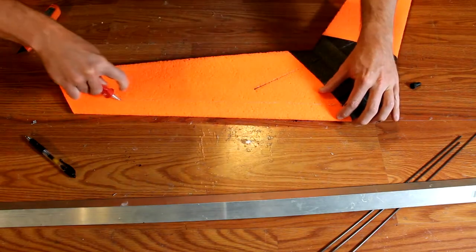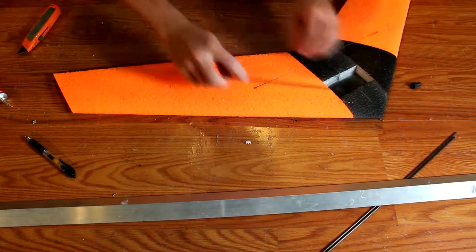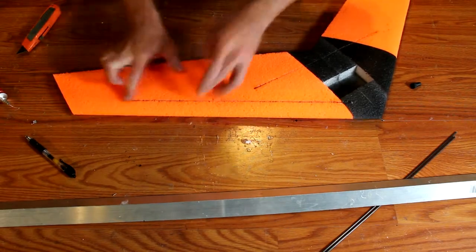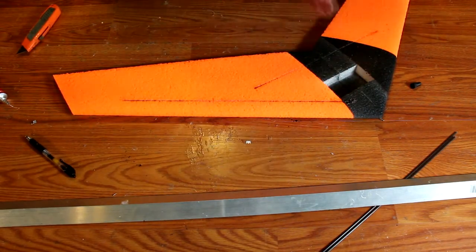Using a straight edge and a knife, cut into the foam again about one eighth of an inch. Then embed your glue into the slot and embed one of your spars.